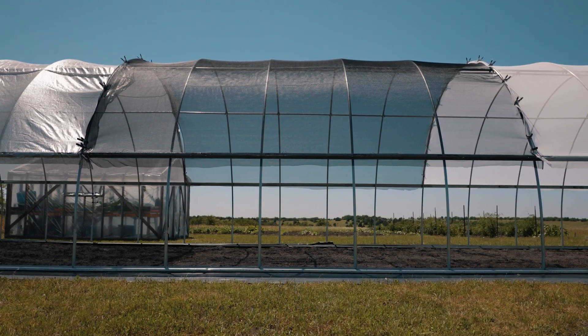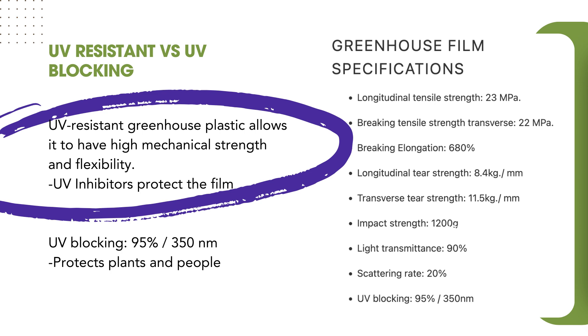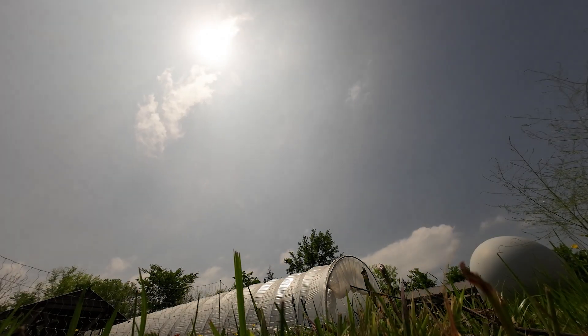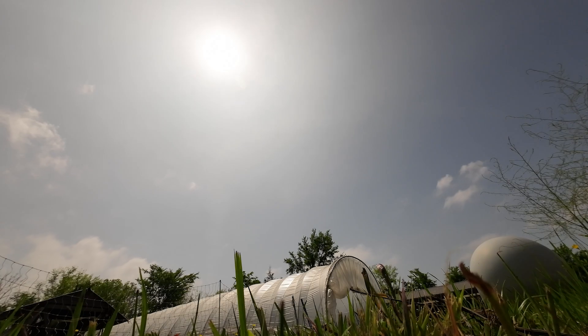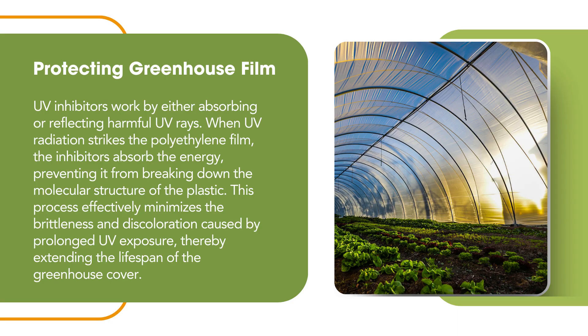We've talked about why ultraviolet radiation needs to be blocked, especially with plants and people underneath, and that anything over 350 nanometers needs to be curtailed with shade cloth added as intensity increases so that plants can properly photosynthesize. The other part of the listing talked about UV stabilizers within the plastic to keep it from becoming yellow, discolored, and brittle. UV inhibitors protect the film, while UV blockers protect the plant from UV rays coming in — we're protecting the plants on one side and the film on the other. UV inhibitors work by either absorbing or reflecting harmful UV rays. When UV radiation strikes the polyethylene film — which is what our greenhouse plastic is made out of — the inhibitors absorb the energy, preventing it from breaking down the molecular structure of the plastic.